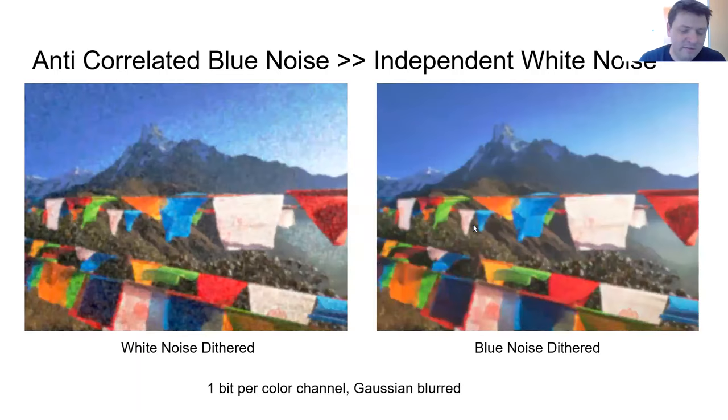And like I was saying before, blue noise is much better for filtering under a Gaussian filter or other low-pass filtering. So here what we did was we took a full-color image, dithered it using white noise on the left, blue noise on the right, then we quantized it to one bit per color channel, so three-bit color total, and then we Gaussian blurred it, and here are the results.